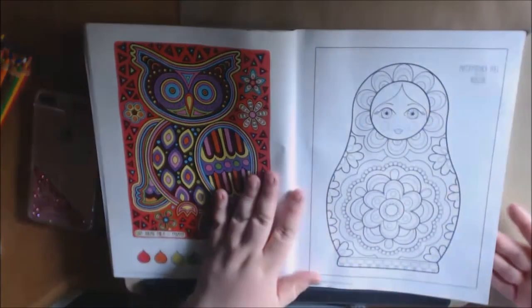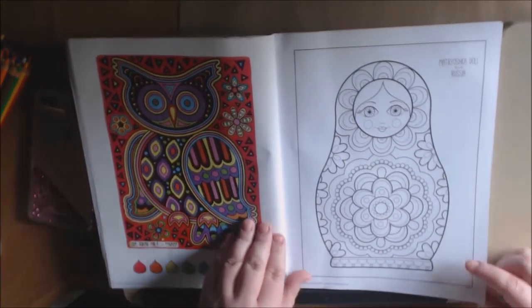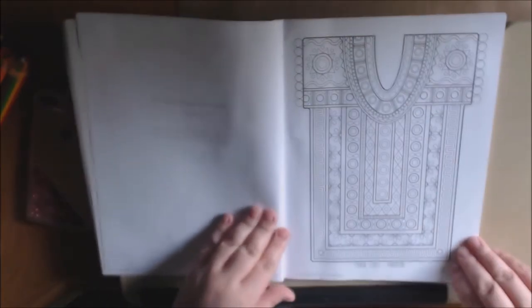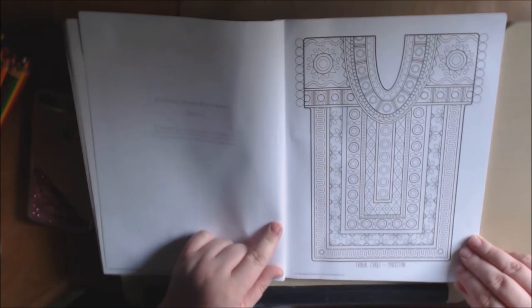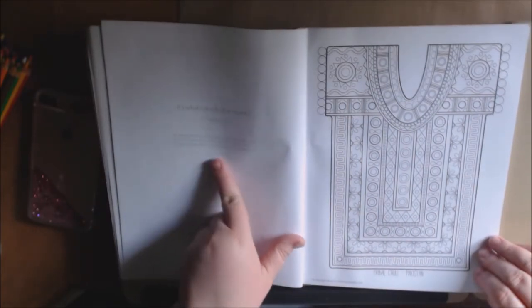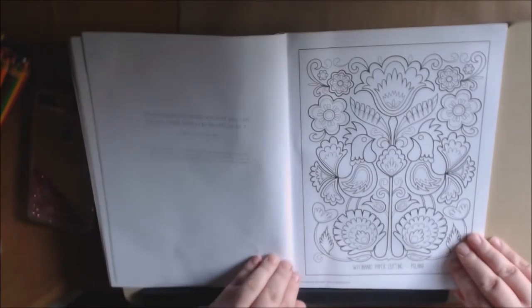Here's a matryoshka doll. See, they show you where they come from and what they're called. This is a tribal - I hope I'm pronouncing these right - choli from Pakistan. And on the back sides they have like a little quote. I'm just gonna flip through and show you.